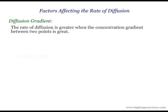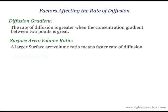Factors affecting the rate of diffusion. Diffusion gradient: the diffusion gradient is the difference between the highly and the lowly concentrated regions. A greater diffusion gradient between two points increases the rate of diffusion. The rate of diffusion in and out of a body depends on the surface area to volume ratio — the higher the ratio, the greater the rate of diffusion, and the lower the ratio, the less the rate of diffusion.